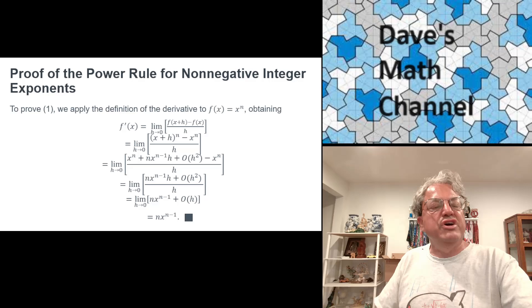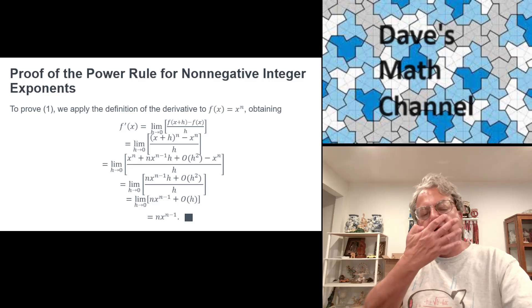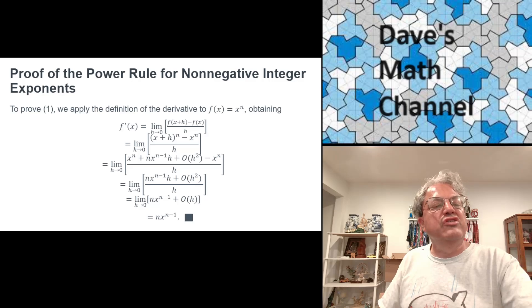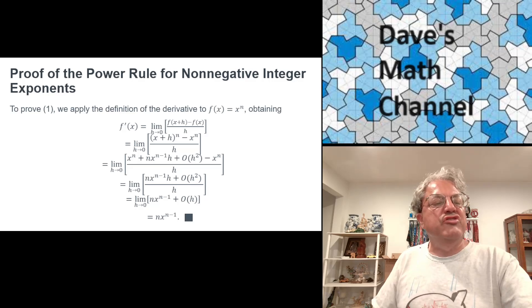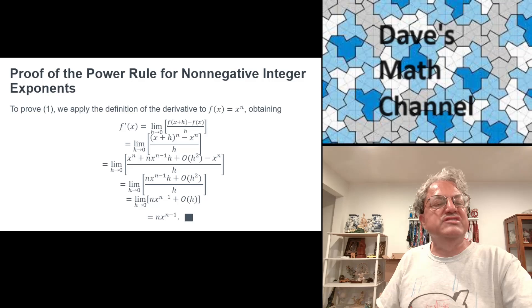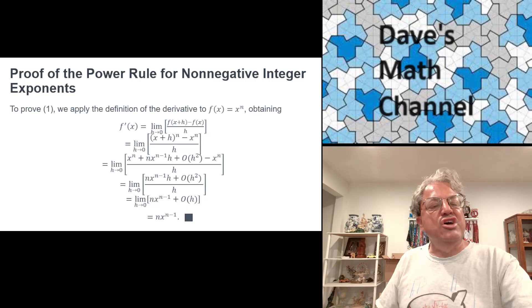Now we can use the binomial theorem to expand the binomial on the left in the numerator. Then we just get x to the n plus n times x to the n minus 1 times h, and now I have this term O of h squared, which we're going to see we can ignore, minus x to the n all over h. You'll notice now that the terms x to the n cancel. When you cancel them, you just get in the numerator nx to the n minus 1 times h plus O of h squared all over h. We can divide both the numerator and denominator by h. When we do that, we get the limit as h goes to zero of nx to the n minus 1 plus O of h.